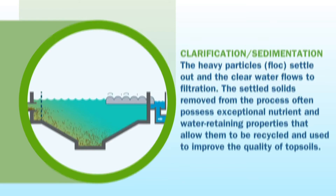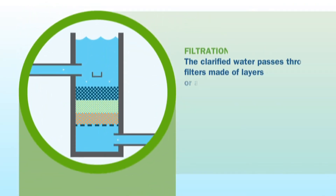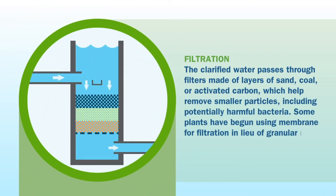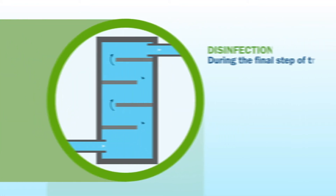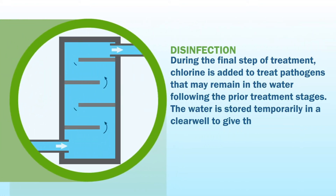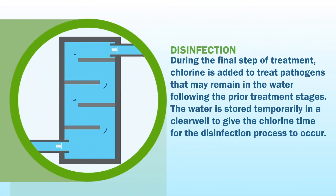The clarified water passes through filters made of layers of sand, coal, or activated carbon, which helps remove smaller particles including some potentially harmful bacteria. During the final step of treatment, chlorine is added to treat pathogens that may remain in the water following the prior treatment stages.